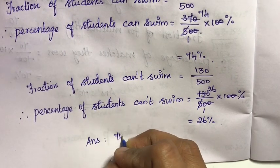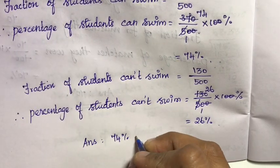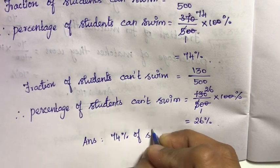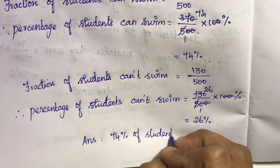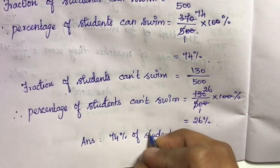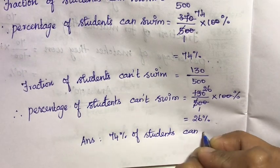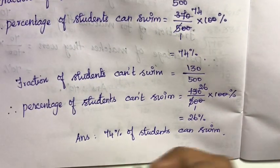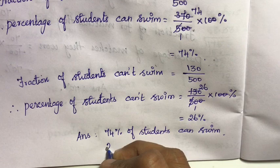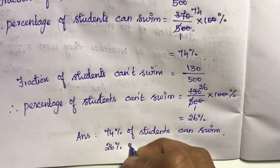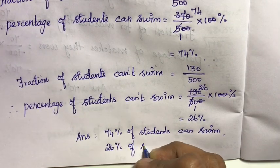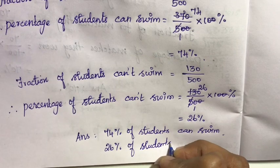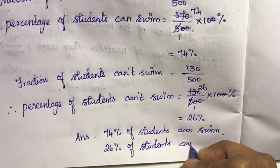Answer: 74 percentage of students can swim, and 26 percentage of students cannot swim.